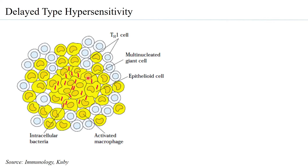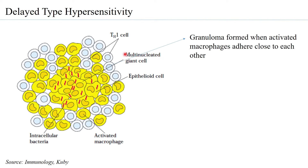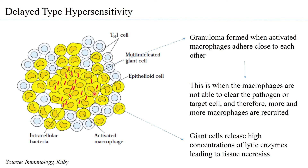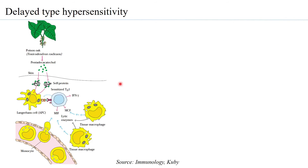In a very prolonged delayed type hypersensitivity, TH1 cells and activated macrophages can come close to each other and adhere to form what is called a multinucleated giant cell. The activated macrophages are unable to eliminate the target cell, so they keep recruiting more and more macrophages, forming a granuloma with a very high number of activated macrophages. These giant cells release high concentrations of lytic enzymes, which then lead to tissue damage — this occurs in prolonged delayed type hypersensitivity.